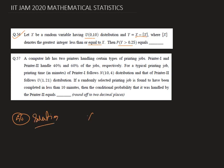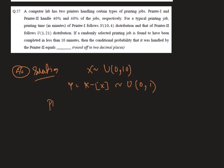By the question, X follows Uniform(0,10) and Y equals X minus ⌊X⌋. For any continuous distribution we know that X minus ⌊X⌋ follows Uniform(0,1). Hence P(Y > 1/4) equals the integral from 1/4 to 1 of dy, which gives 1 minus 1/4, so 0.75 is our required answer.